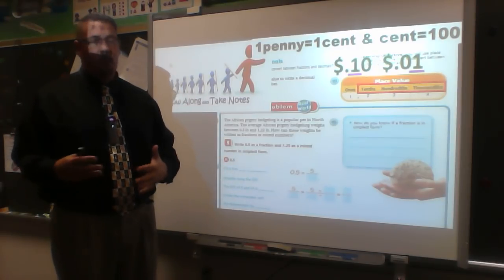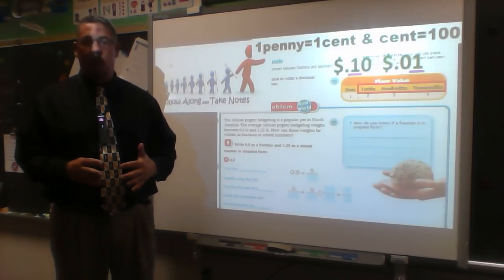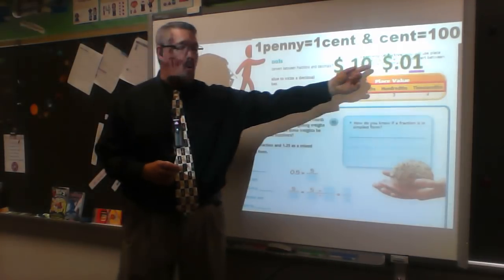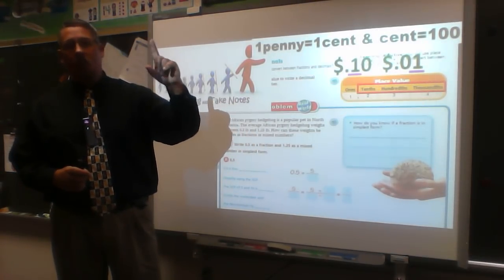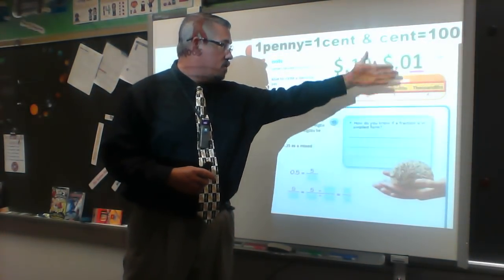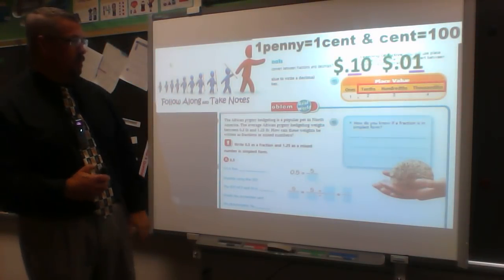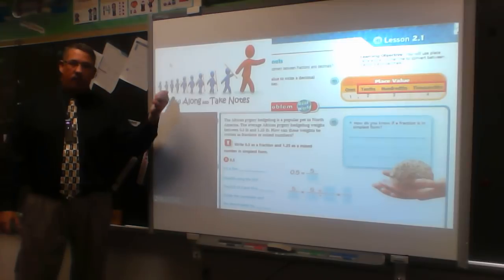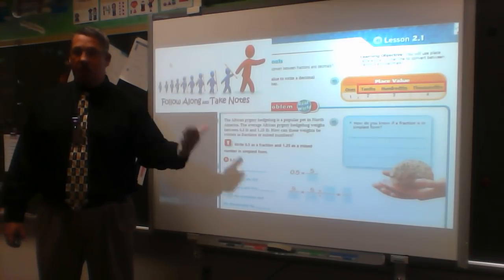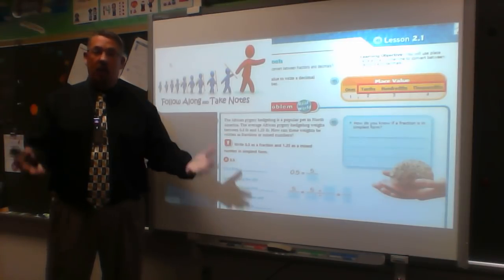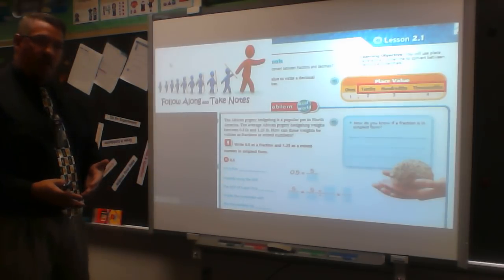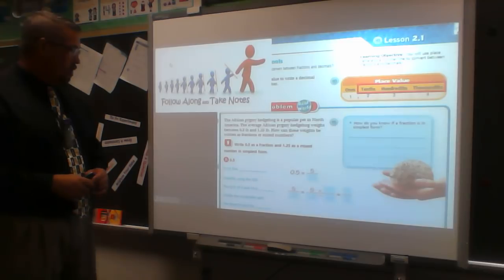As I said at the very beginning, any fraction can be made a decimal and any decimal can be made a fraction because they can be converted — changed from one form into another. Now I'm going to talk about this African pygmy hedgehog. I have two weights to compare: 0.5 and 1.25. From this point forward I'm going to start using the actual decimal names more and less of just saying '0.5.'